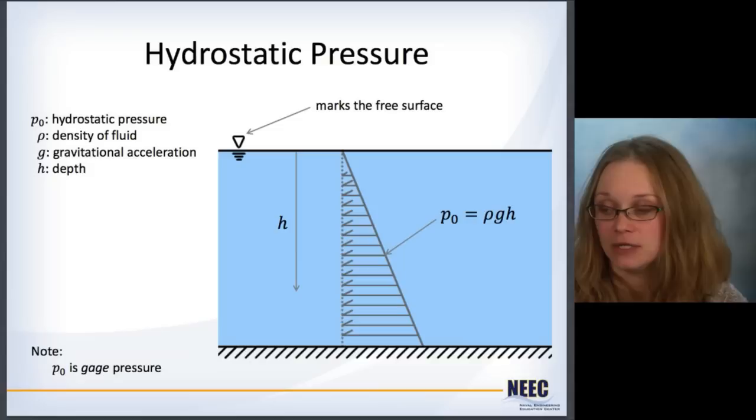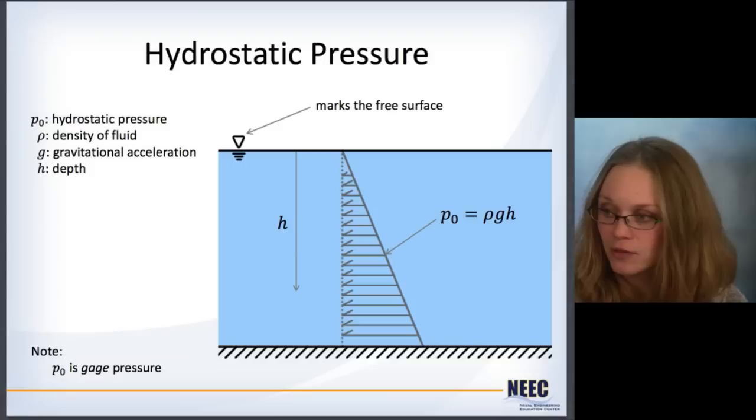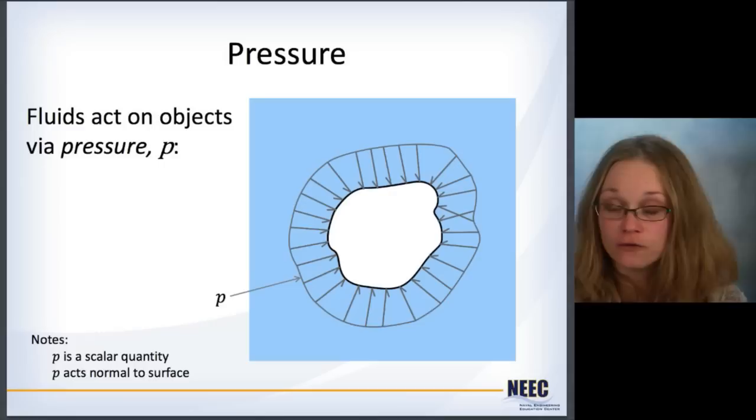So here is hydrostatic pressure. Hydrostatic pressure, we're going to denote P sub zero. It's defined as the density of water times gravity times h, which is the depth. As you can see, it's a linear relationship between the pressure and the depth. It's measured from the free surface, which means that it's gauge pressure. We're not considering atmospheric pressure on top of this.